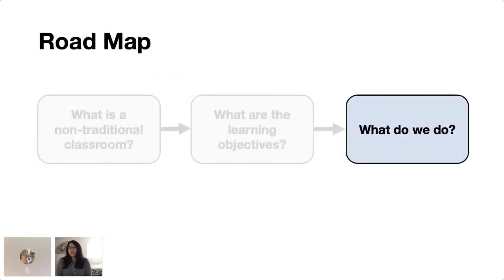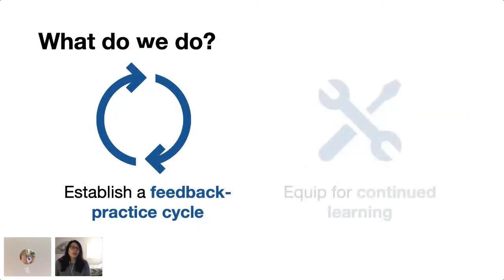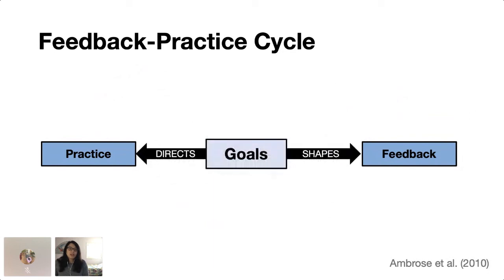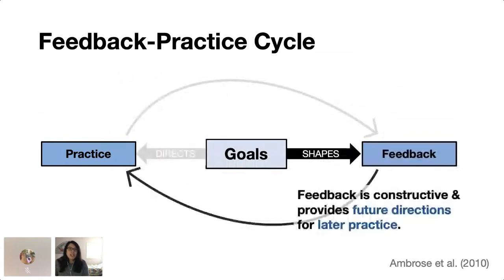So on that note, once we have our goals set and our learning objectives articulated, what do we do now? So a couple things that I suggest that hopefully any educator here can take away from this talk is establishing a feedback practice cycle and equip learners for continued learning and practice. So first of all, we want to establish this feedback practice cycle. What do I mean by this? Generally, we don't have that much time in our learning environment. So all opportunities for practice need to be maximally informative and relevant to the learning objectives. And so that means that everything, both practice and feedback must be goal driven. Specifically, what we practice is directed by our learning goals and objectives. And in order for feedback to be constructive, it needs to be informed by our goals and provide future directions for later practice.